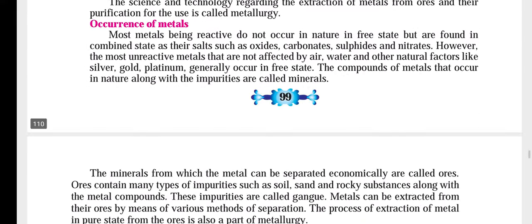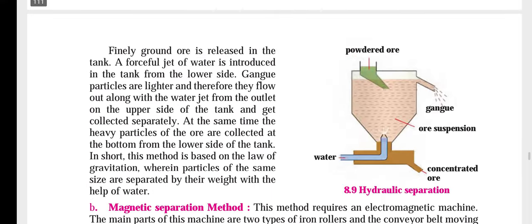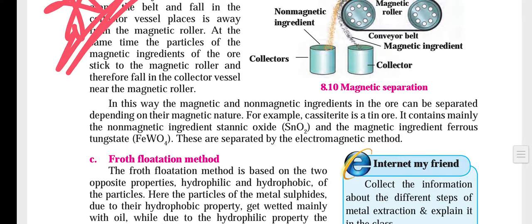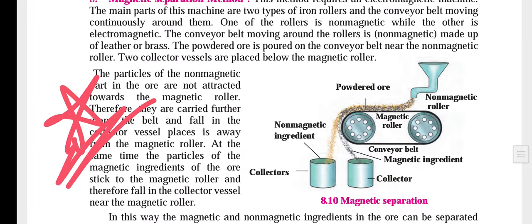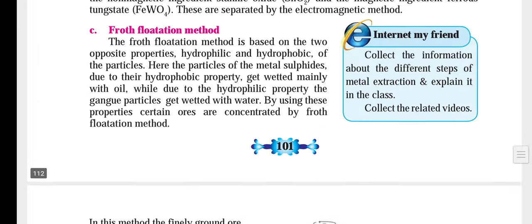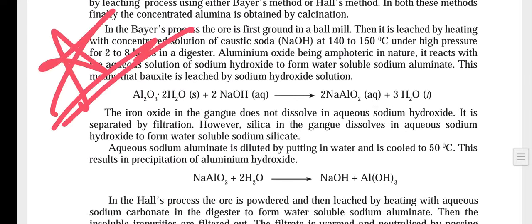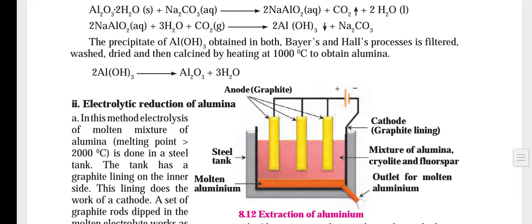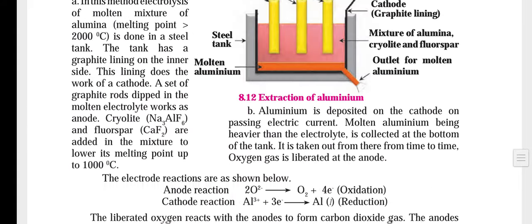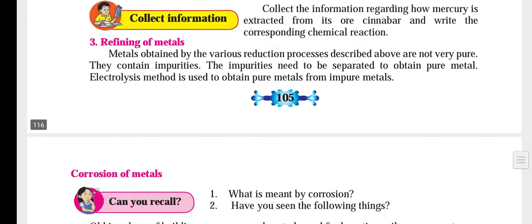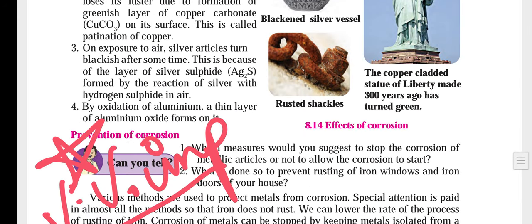Moving further ahead to page number 101 we will see Bayer's process. Further we will get page number 103: bauxite, concentration of bauxite, and electrolytic reduction of alumina on page number 104. These are very very important — as many stars as possible. Especially the electrolytic reduction of alumina question because it carries marks.